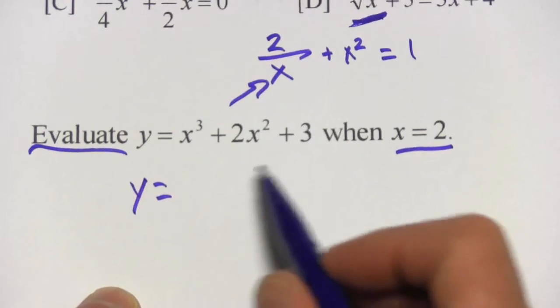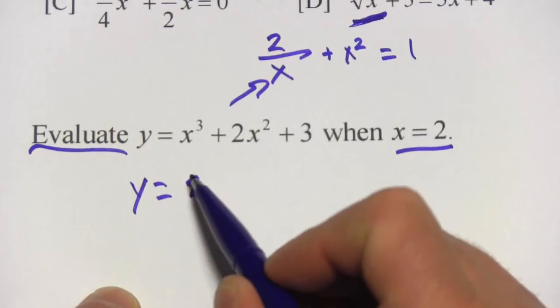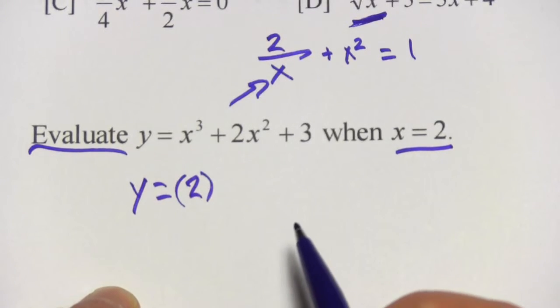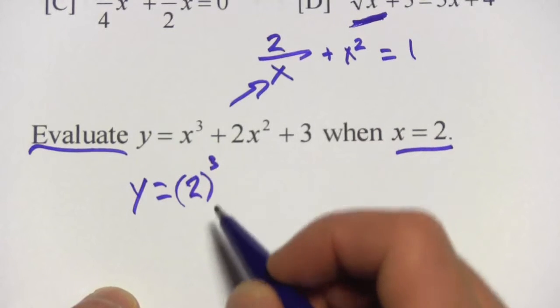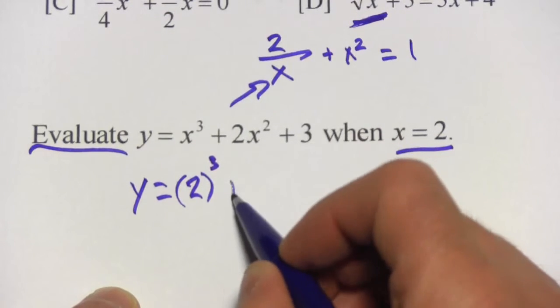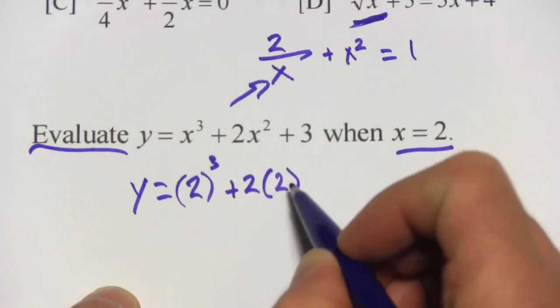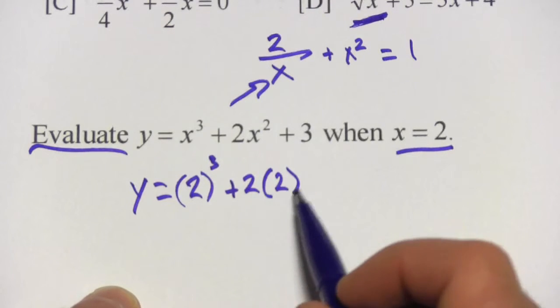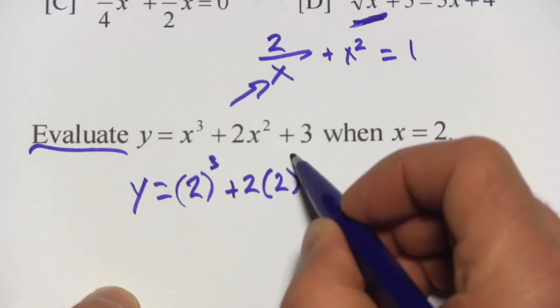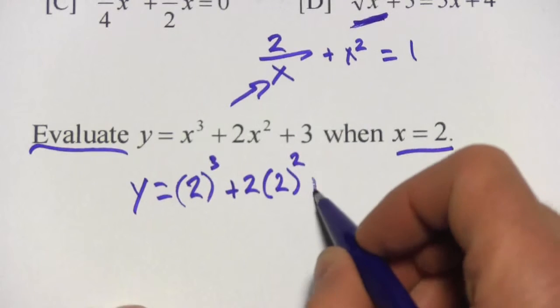So y equals, well x should be 2, and I always put the 2 in parentheses so I don't get confused, and then this is to the third power. So y equals 2 to the third power plus 2, and I'm going to put in my 2 for x there, put it in parentheses, and x is squared and then plus 3.